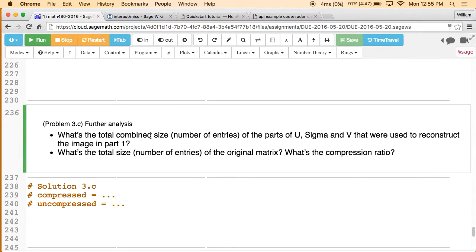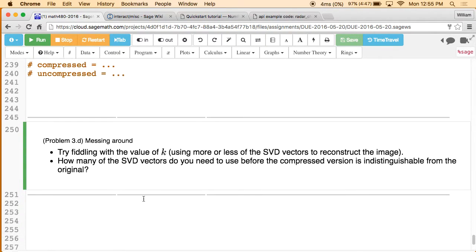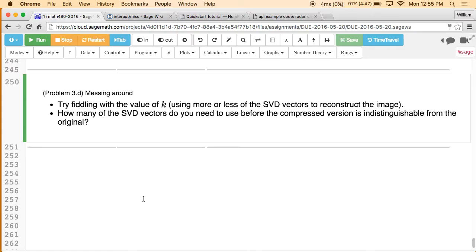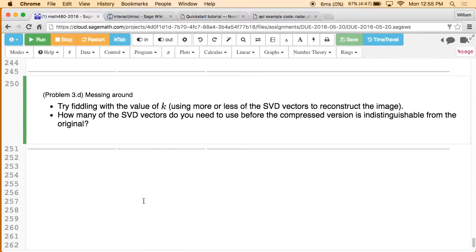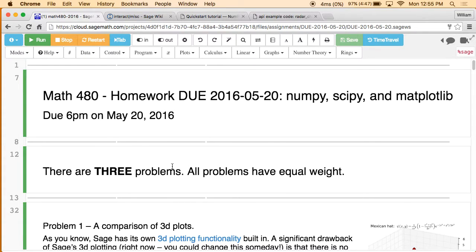One part involves uploading an image and going through these steps to compute the singular value decomposition and show a compressed version. It shouldn't be hard because you just basically copy this code above and make some changes. Then you're going to try varying the parameters and seeing how good the compression is or how bad it is. And then something else involving how compressed it is and fiddling with values. So those are the problems. Hopefully it'll take you less time to do than it took us to make them.